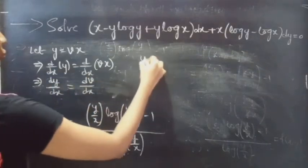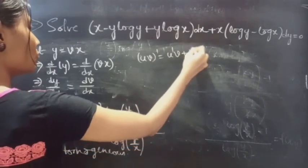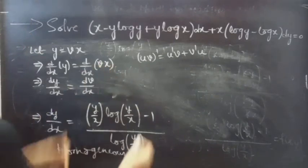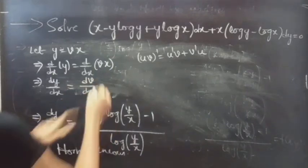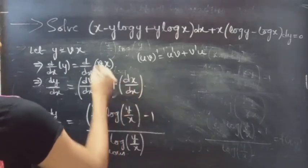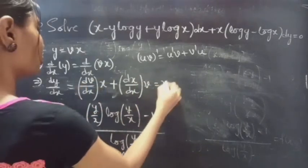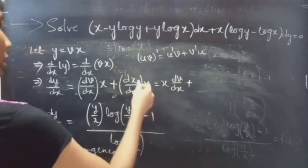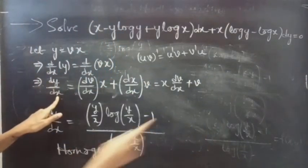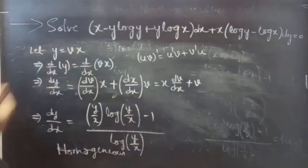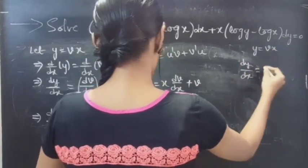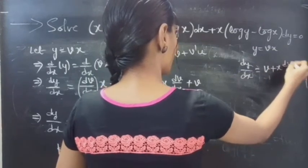Since we know that the derivative of a product uv equals u'v plus v'u, we differentiate vx to get: derivative of v with respect to x times x plus derivative of x with respect to x times v. This equals x times dv/dx plus v. So we have dy/dx equals v plus x times dv/dx, and y equals vx.